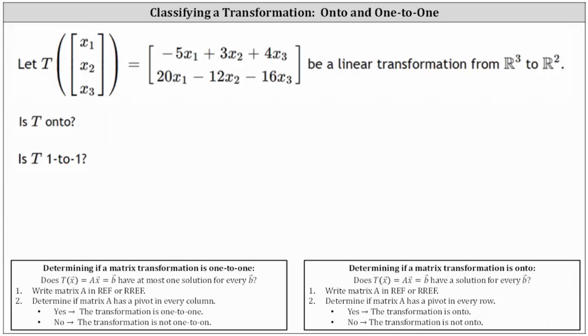We're told that the transformation of vector x equals the given formulas, and is a linear transformation from R3 to R2. We're asked to determine if T is onto and/or one-to-one.